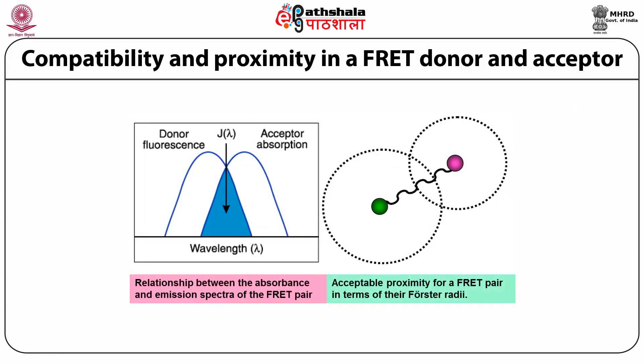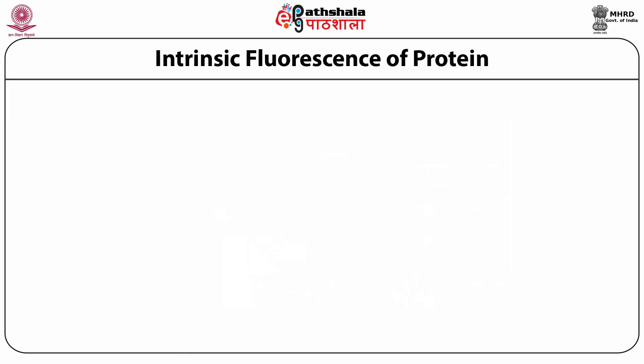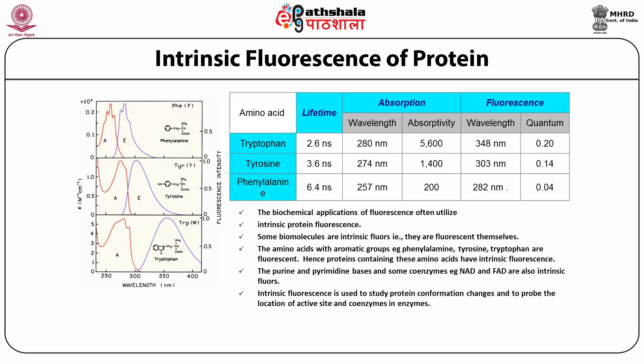We explain the compatibility and proximity in a FRET donor-acceptor pair. The relationship between absorbance and emission spectra of a FRET pair must have some overlapping integral constant J, and the pair should be in close proximity — as shown in the figure in terms of their Förster radii. We then explain the intrinsic fluorescence of the protein.